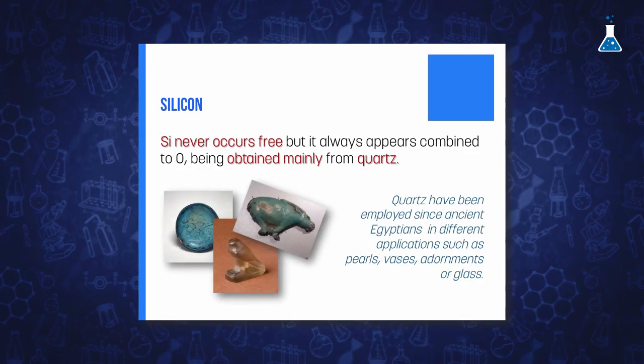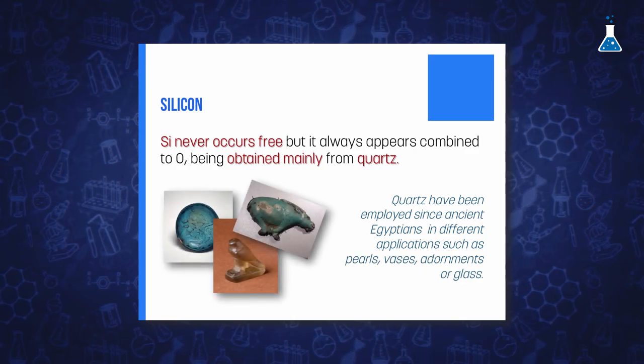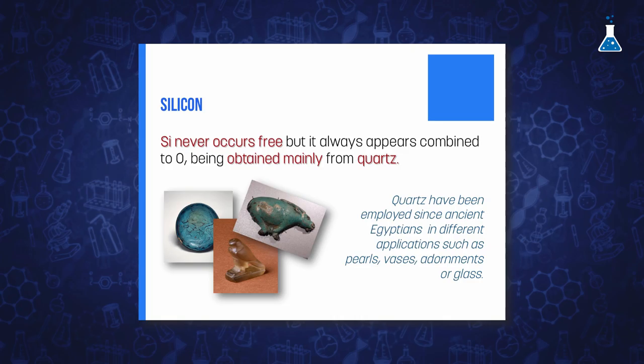They manufactured it in the form of pearls, vases or even adornments for their construction. They also learned how to make glass by fusing quartz and alkali together in crucibles of pottery.